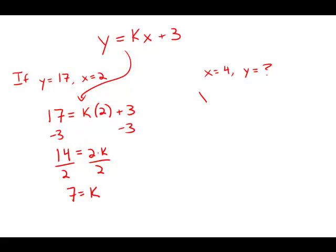So I'm going to go back to this equation and now plug in 7 for k, plug in 4 for the value of x now, and this is 28 plus 3, which is 31. And this is answer choice B.